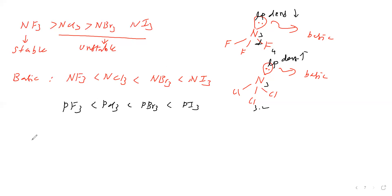NF3 cannot form complexes, but PF3 can form complexes. In a complex, the central metal is an electron pair acceptor and the ligand is the electron pair donor. In NF3, nitrogen has very low tendency to donate its lone pair, so it cannot bond with the central metal. In PF3, phosphorus can donate its lone pair readily, so PF3 forms several complexes.